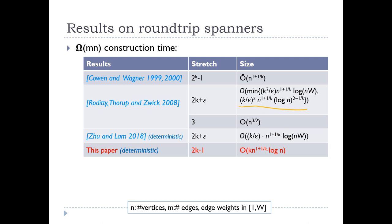In 2018, Schieber and Lam gave a deterministic construction of the 2k+ε stretch round-trip spanner with size about O(k/ε · n^{1+1/k} · log n · w). In this paper, we improve the stretch to 2k-1 and the size to O(k · n^{1+1/k} · log n), which almost matches the undirected spanner, and our construction can also be deterministic.